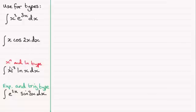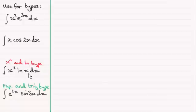Here's a special type we'll discuss later in another video, where we've got the integral of x to the power n multiplied by a natural log type — in this example, x cubed times the natural log of x. Or you might get this type, where you've got an exponential function multiplied with a trig function, like e to the 2x times sine 3x.